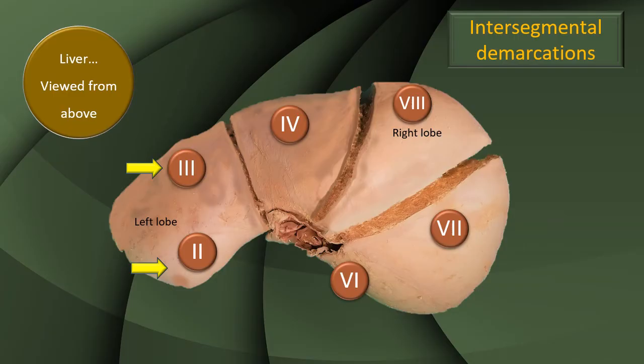Just to recap, in the previous videos, we have classified the liver from anatomical lobe to a new definition of a physiological lobe, then sectors, and finally segments. We have proceeded to identify the various segments — four in the right lobe and four in the left lobe. By the word lobe, I mean physiological lobes. We need to do some dissections inside the segments and try to identify the portal vein and its branches, or the hepatic vein and its tributaries.